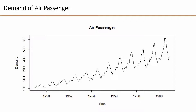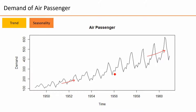This graph in front of you is the classic Box and Jenkins airline data, which records the monthly totals of international airline passengers between 1949 and 1960. From this graph, we can clearly observe a long-term upward trend. The graph also gives a clear indication of seasonality — demand is much lower in January, February, March, and December, while it peaks in July and August.